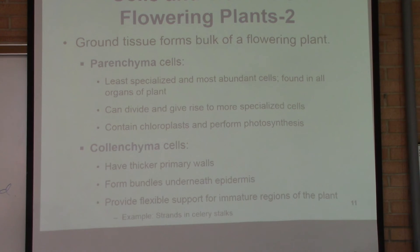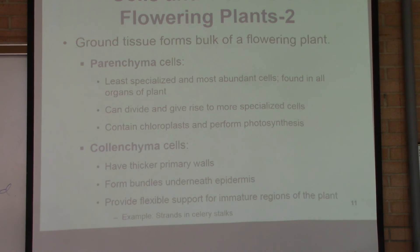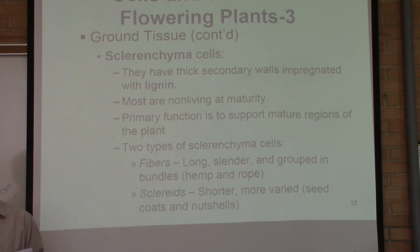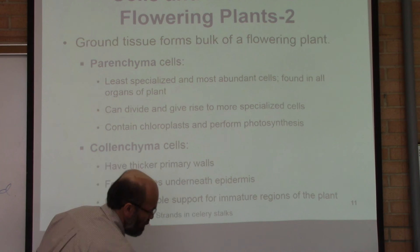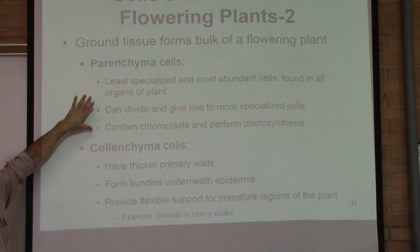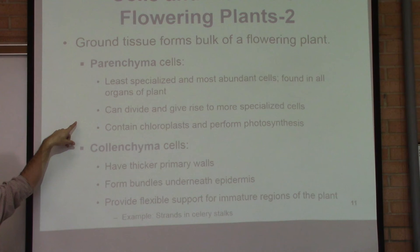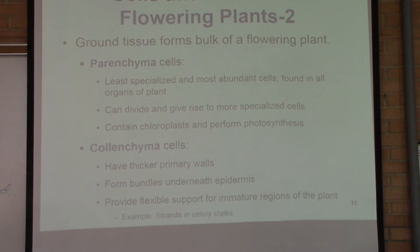Collenchyma cells have very thick walls — they are tougher and thicker cells that make bundles and form usually the second layer after the outermost layer. They provide support to the plants, and they are very obvious in celery stalks — the branches of celery are crispy and tough because of these cells. Both parenchyma and collenchyma cells are found throughout plants, though they are more abundant in certain parts. All three cell types are dispersed throughout different parts of the plant.